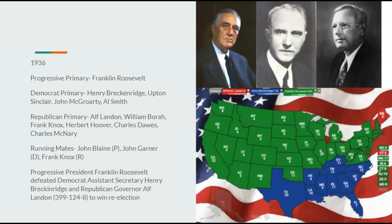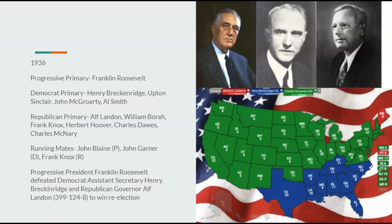Going on to 1936, Franklin Roosevelt, still being as popular as ever, would dominate this election. Al Landon picks up Maine for Republicans, but that doesn't do much. Henry Breckinridge would do very well in the South — not including Virginia and West Virginia — as well as Oklahoma. Progressive President Franklin Roosevelt would defeat Assistant Secretary Henry Breckinridge and Republican Governor Al Landon, 399 to 124 to 8, to win re-election.